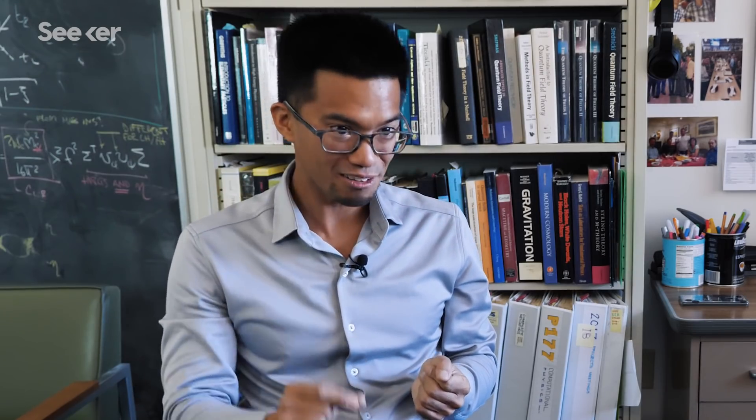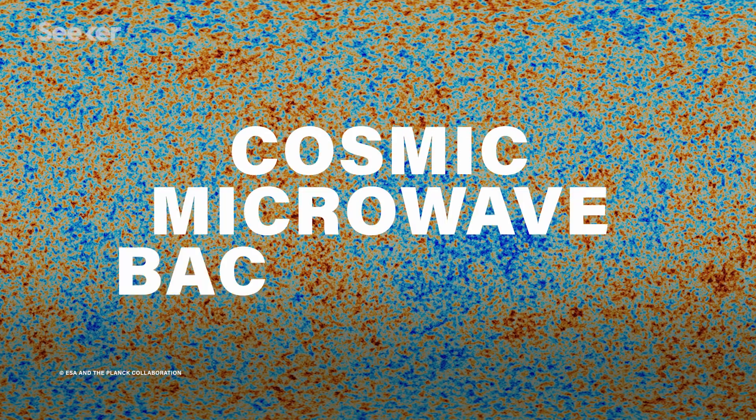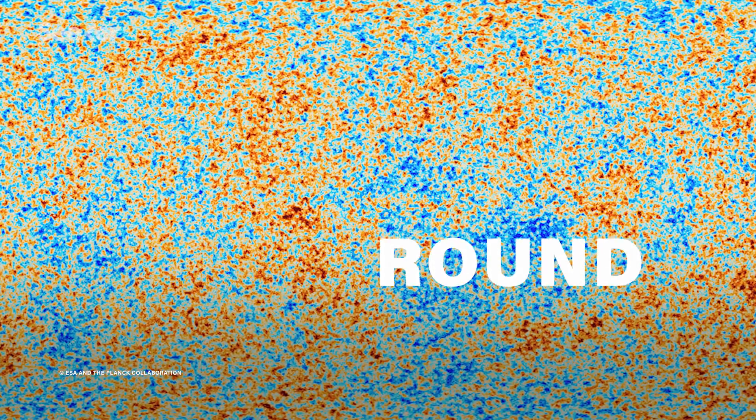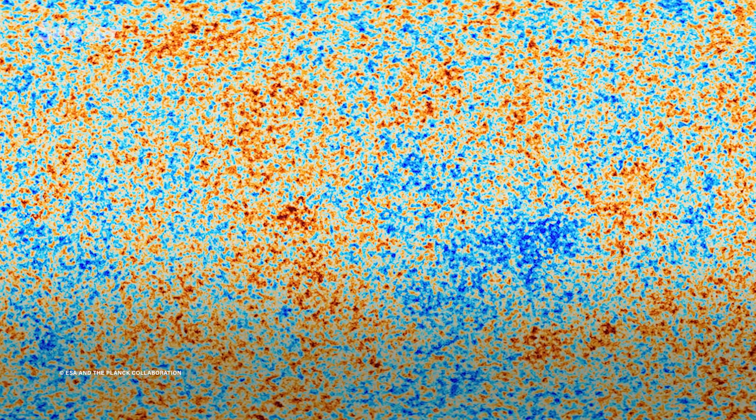But by far, the smoking gun for dark matter is the cosmic microwave background. This is the earliest thing that we can see through our telescopes through light.